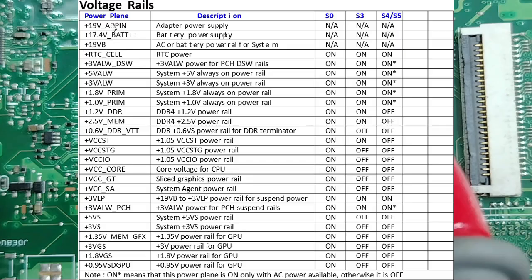The first voltages are the adapter power supply — what we want here is the B+ or battery plus at 19V. Then we have the RTC cell — real-time clock power — which is on in all states because it's sourced by the CMOS battery. Then we have 3V always, 5V always, and 3.3V DSW always. DSW means this 3.3V is for the PCH — inside the PCH there are components and controls that need this 3.3V.